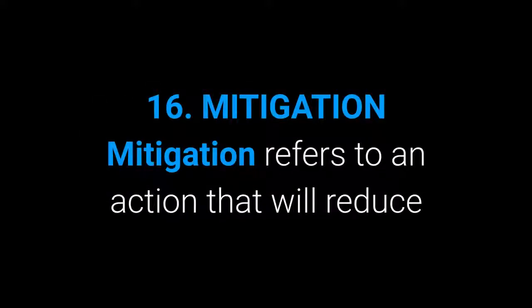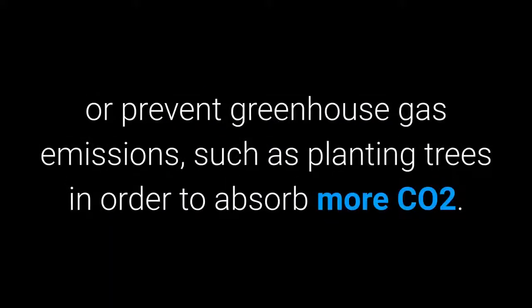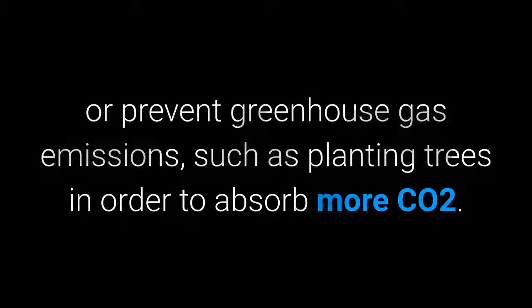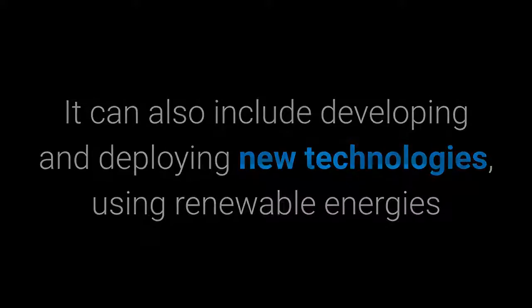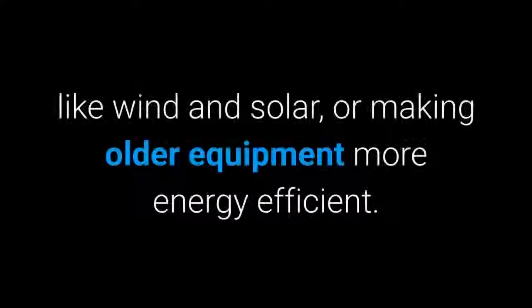16. Mitigation. Mitigation refers to an action that will reduce or prevent greenhouse gas emissions, such as planting trees to absorb more CO2. It can also include developing and deploying new technologies, using renewable energies like wind and solar, or making older equipment more energy efficient.